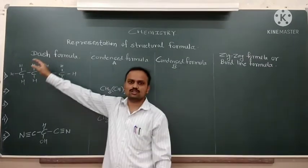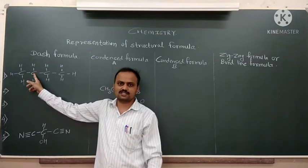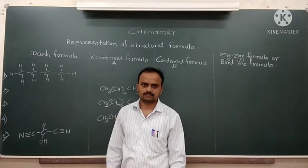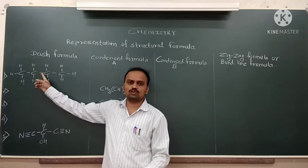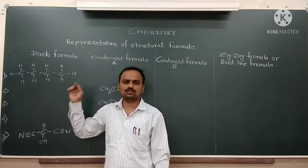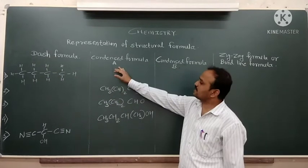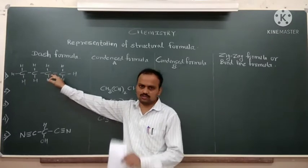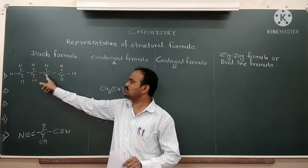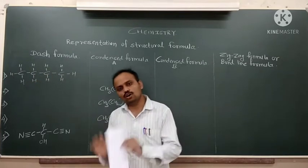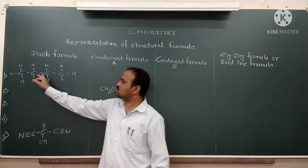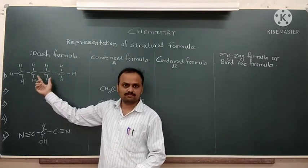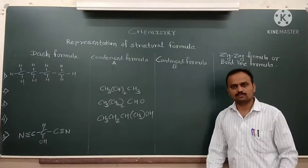In dash line formula, students, all bonds between carbon atoms and carbon and hydrogen or carbon and other elements are shown. In condensed formula, means single bonds, carbon, carbon and hydrogen etc. In condensed formula A and B, either these bonds are not shown designated, CH3, CH2, CH2, CH2, CH3 is written. Or, sometimes instead of writing all CH2, CH2 separately, we write CH2 and 2 because there are 2 CH2 neighboring. It means there are 2 types of condensed formula A and B.